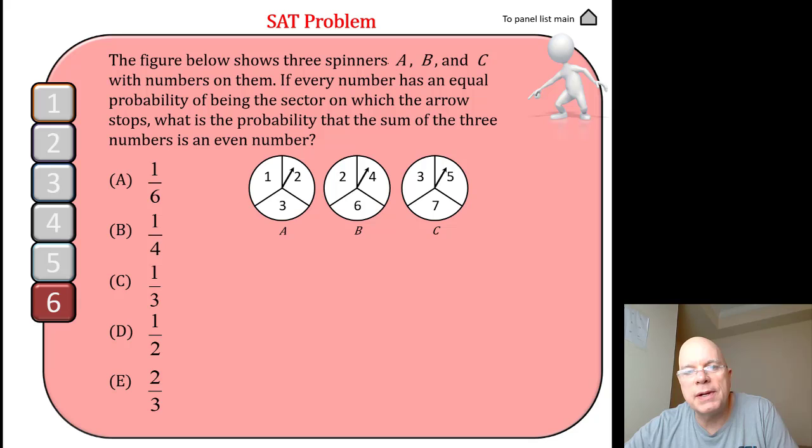The figure below shows three spinners A, B, and C with numbers on them. If you look carefully, they're slightly different spinners. If every number has an equal probability of being the sector on which the arrow stops, in other words all of these pie slices are 120 degree angles which you can see by just inspection, but it's nice that they're clear about that.